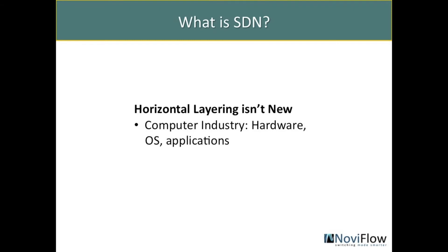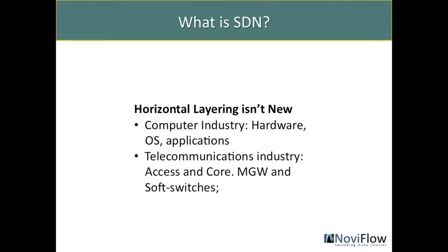This horizontal layering of systems is not a new phenomenon. Computers were originally sold as monolithic machines with hardware, operating system, and applications all from a single vendor. Other examples are from the telecommunications industry where horizontal layering has taken place at multiple levels: layering of the GSM mobile system into access and core, layering of MSCs into media gateways and soft switches, and layering of network nodes themselves into commodity computers, operating systems, and applications.